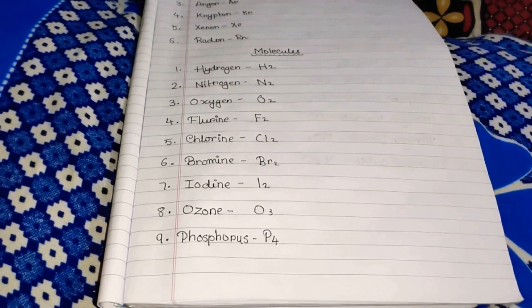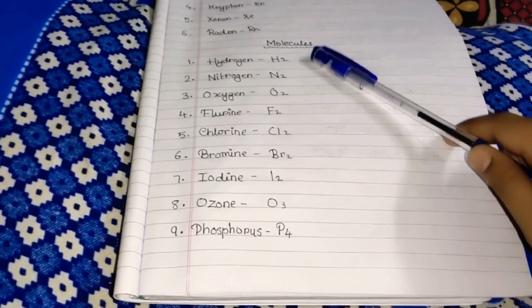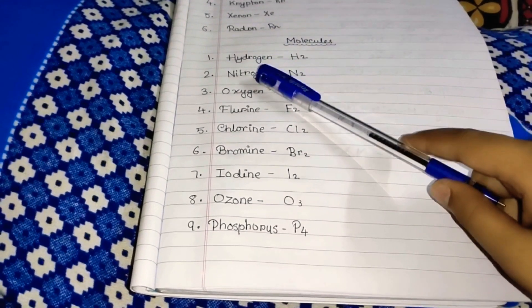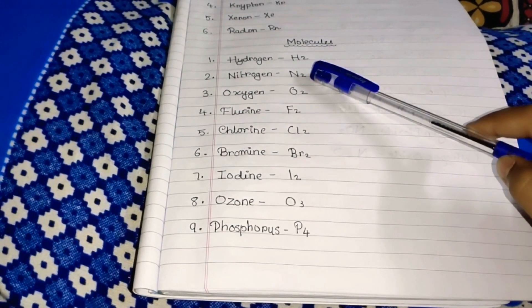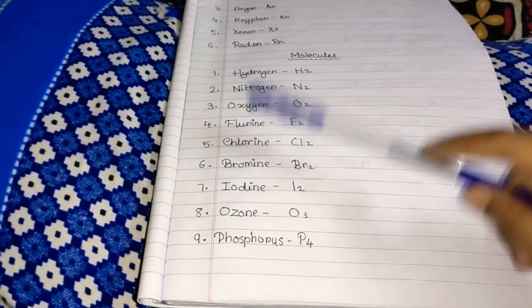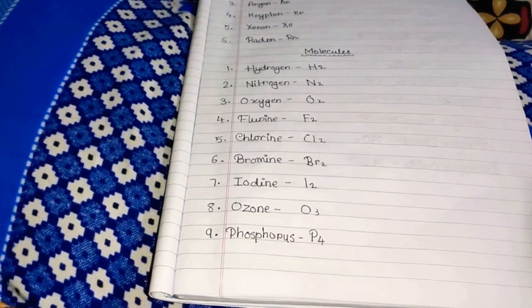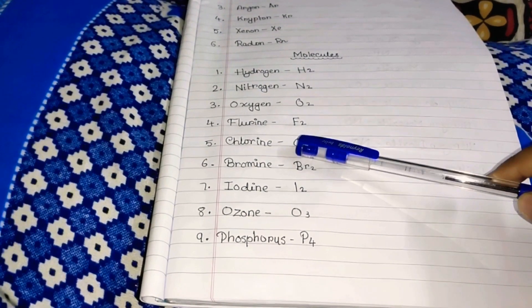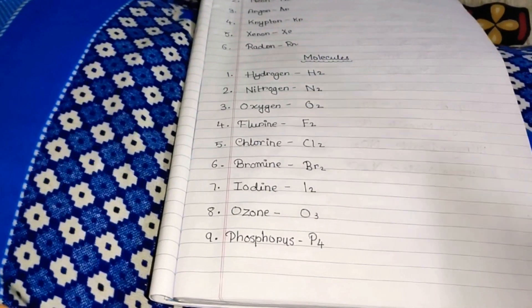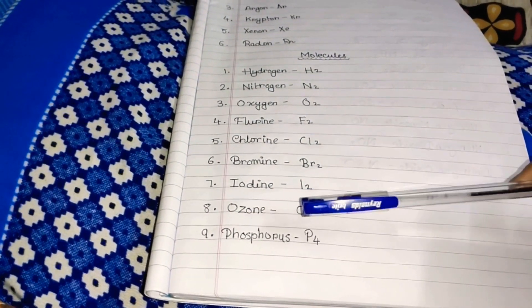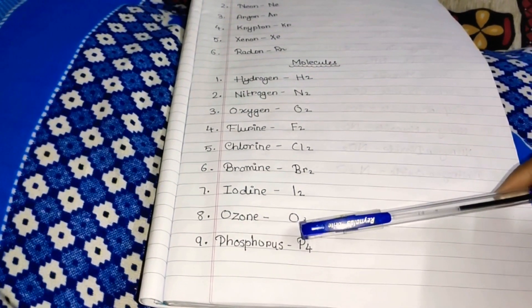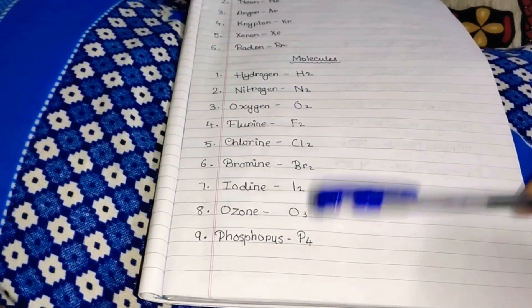Now we will learn about the molecules. You all know about the molecules as I taught in the chapter one of physics. First is Hydrogen equals to H2, two atoms of hydrogen. Nitrogen N2, two atoms of nitrogen. Oxygen O2, two atoms of oxygen. Fluorine F2, two atoms of fluorine. Chlorine Cl2, two atoms of chlorine makes one molecule of chlorine. Iodine I2, two atoms of iodine. Ozone O3, three atoms of ozone. Phosphorus P4, four atoms of phosphorus.